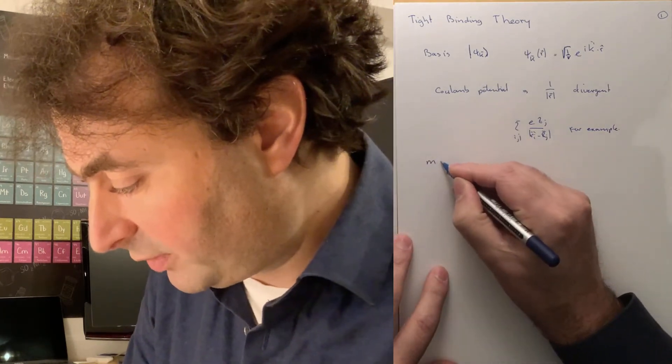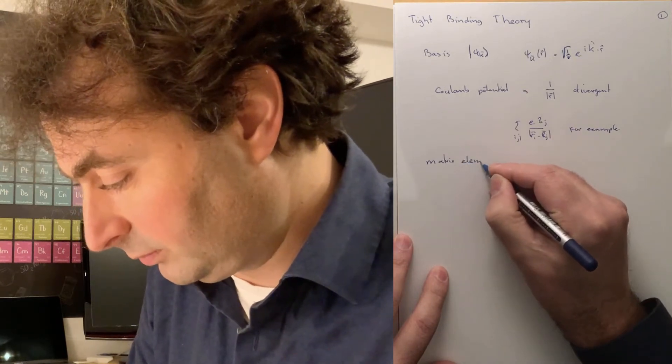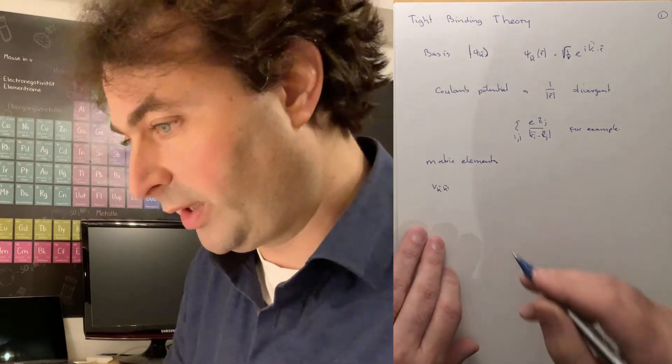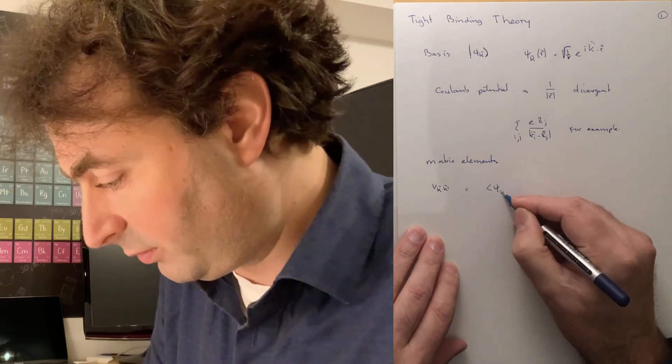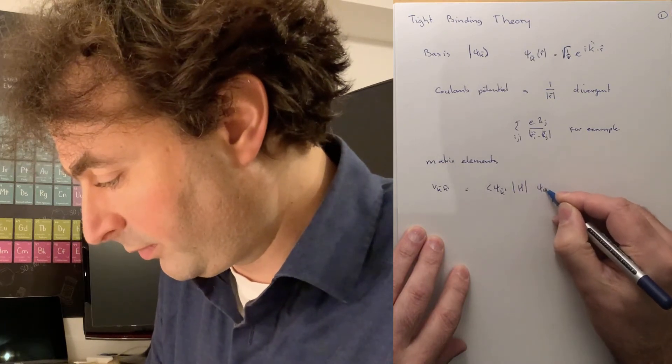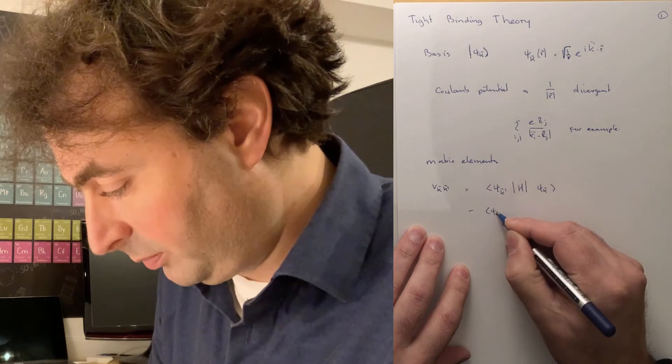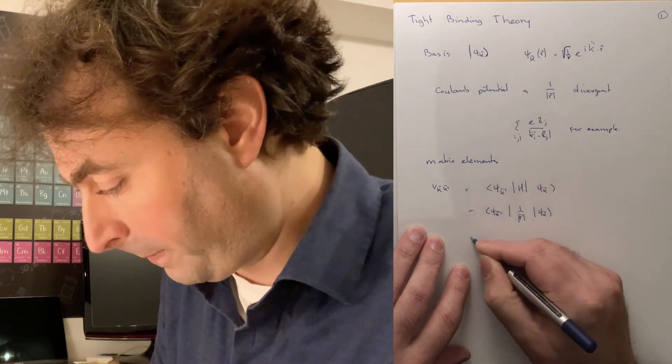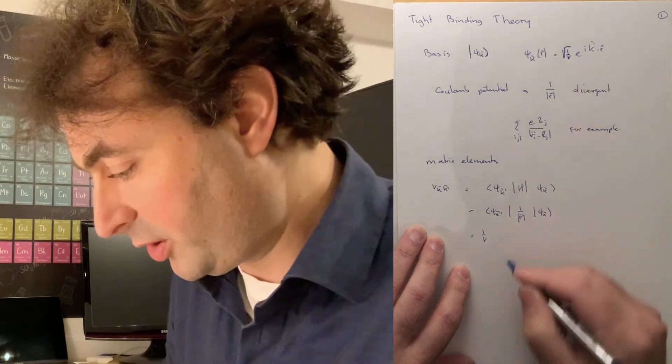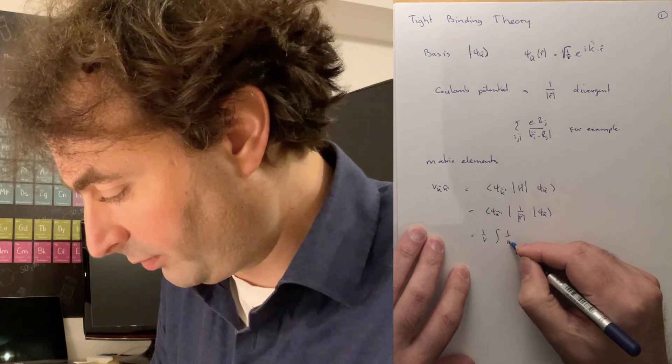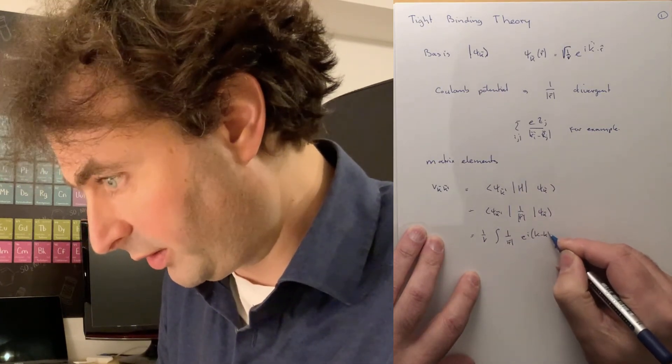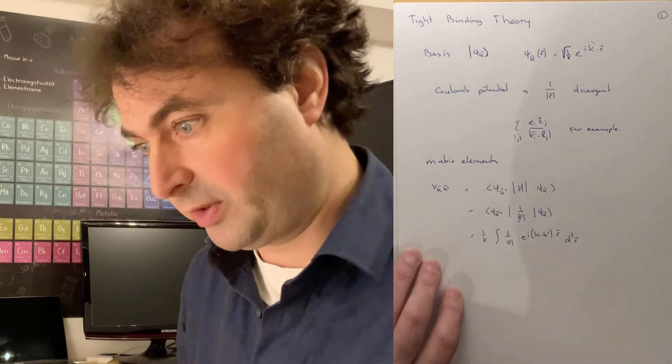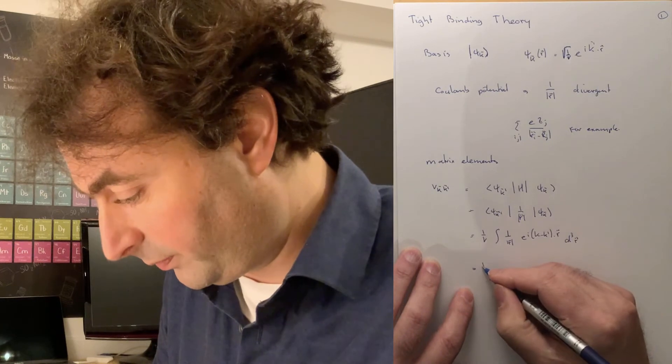If we now want to calculate the matrix elements in our Hamiltonian, then we have the scattering between wave functions with wave vector k to k prime. And that is given as the expectation value k prime Hamiltonian k, or psi k prime 1 over r psi k. Or as an integral 1 over v, because I have the normalization of both of them, the integral over the volume v e to the i k minus k prime dot r integrated over the volume v.